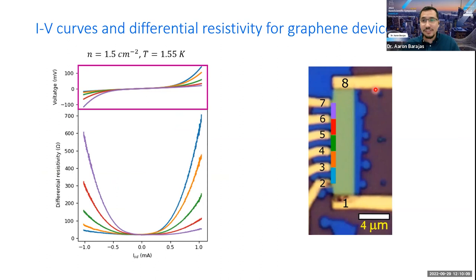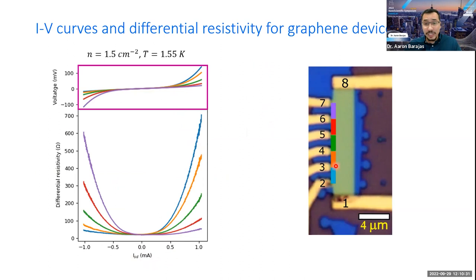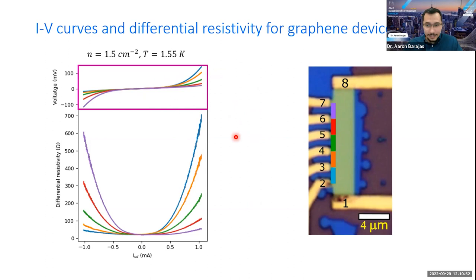Let's focus first on the IV curve directly measured from this graphene device. From a regular ohmic material, we should expect a linear dependence of voltage versus current, and that is what we see at low current. But when we start increasing the current, we begin to see a nonlinear behavior in the IV curves, suggesting that the resistivity of the device is actually changing.